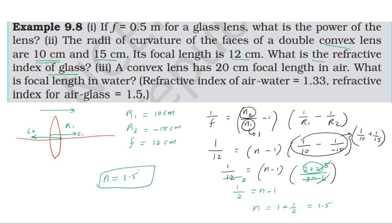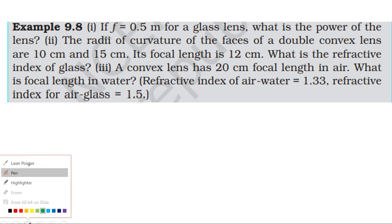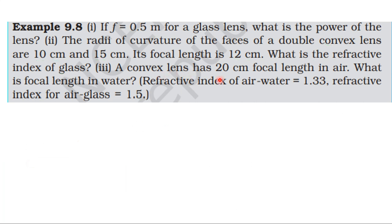For the third problem, we have a convex lens with focal length 20 cm in air. We need to find the focal length in water. The refractive index of water is 1.33 and the refractive index of glass is 1.5.